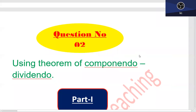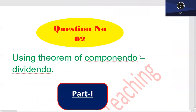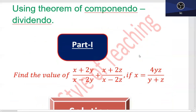Question number 2: using the theorem of componendo and dividendo, find the value of (x + 2y)/(x - 2y) + (x + 2z)/(x - 2z), if x is equal to 4yz/(y + z).